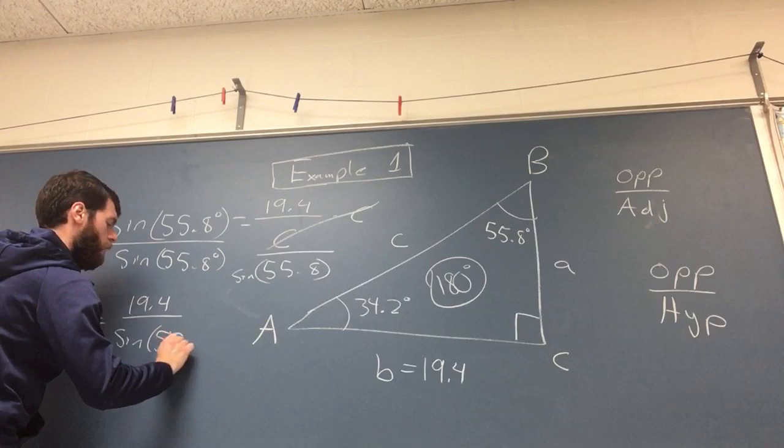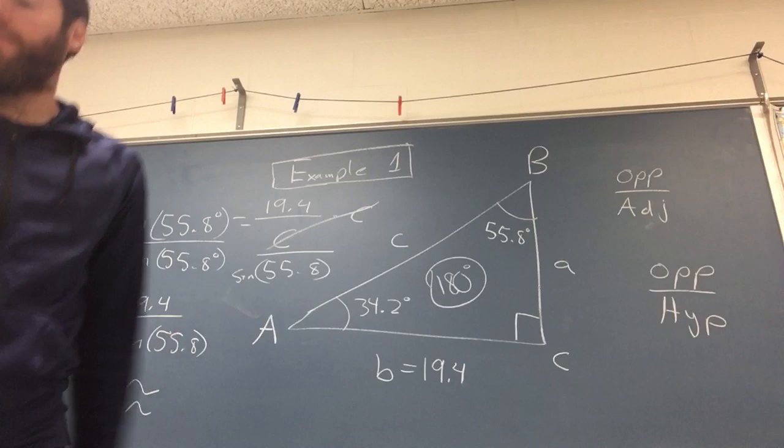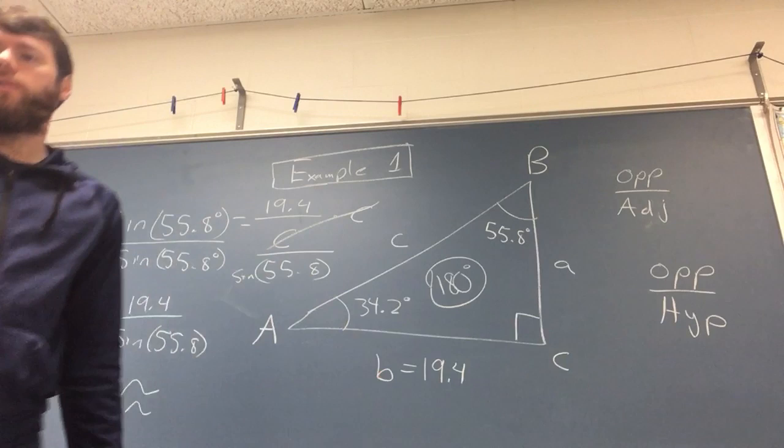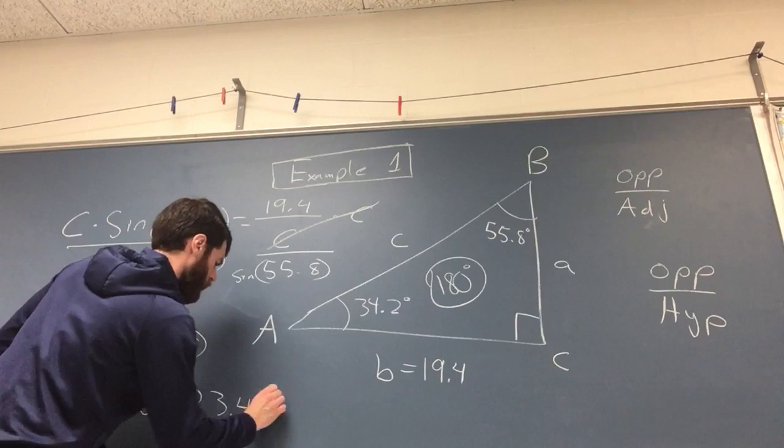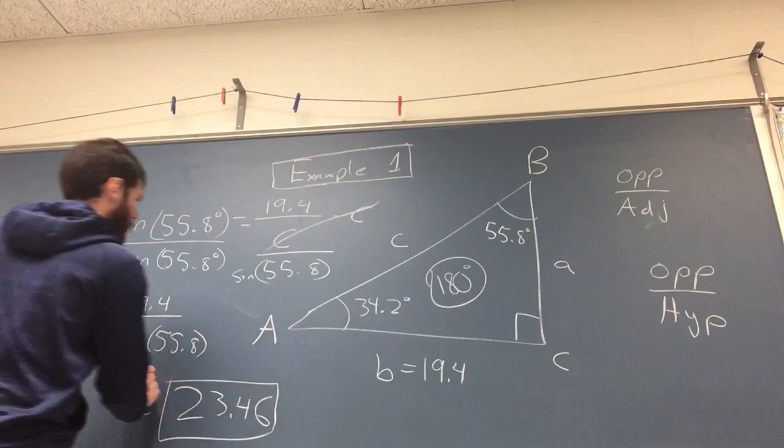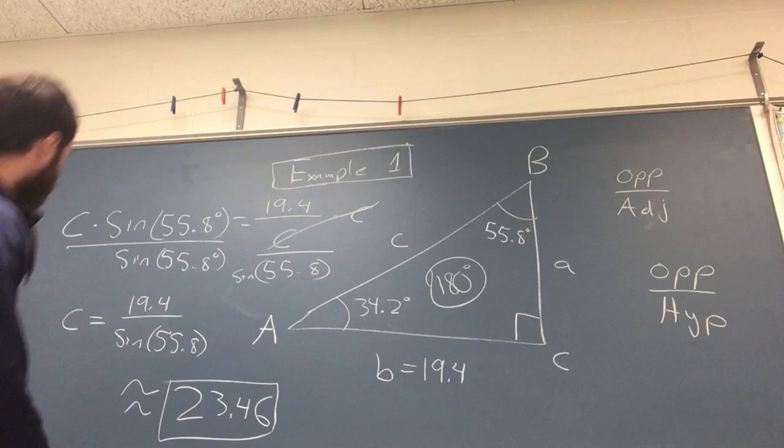Which should work out to be, this is where I refer to either my calculator or the book, 23.46. Yeah, there you go. We found B, we had B, we found A, we found C, and we found angle B. Easy enough example.